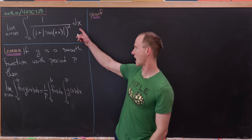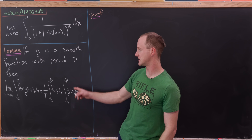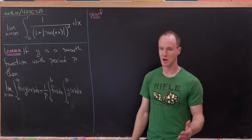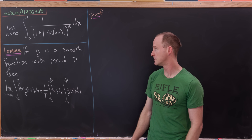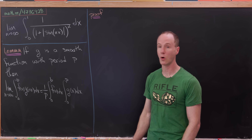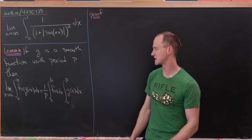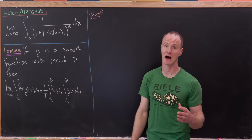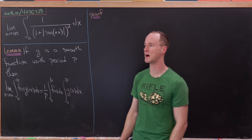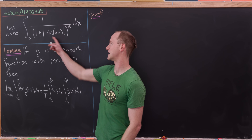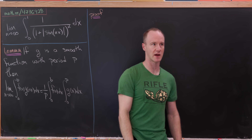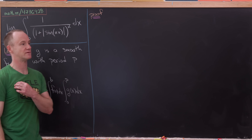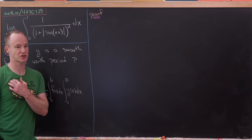Notice that our setup is exactly this, where f of x is simply the constant function 1, and g of x is that whole expression but with just x instead of nx. The period in this case is pi — you might say 2 pi, but it's actually pi because we have an absolute value there, and the period of the absolute value of the sine function is pi.